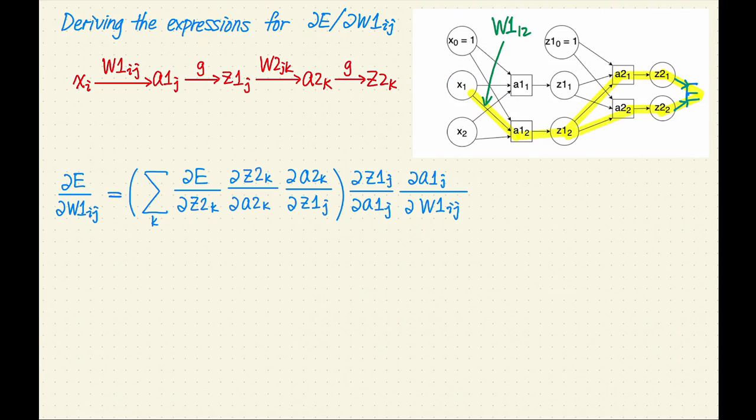Similar to the previous derivation, you might find it helpful to make this expression more concrete. If we simplify some terms, we'll get the second expression. Whenever we have a derivative of z with respect to a, the result is a derivative of the activation function g. We have two other similar terms.